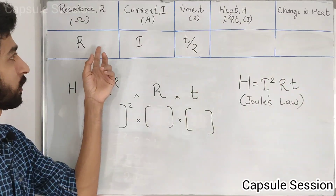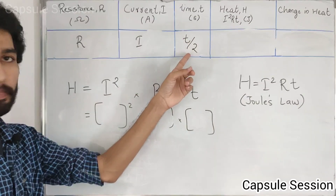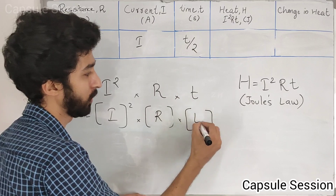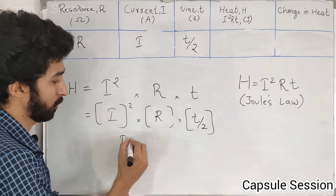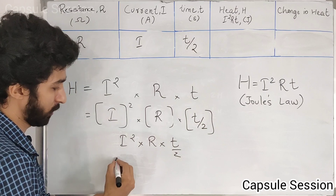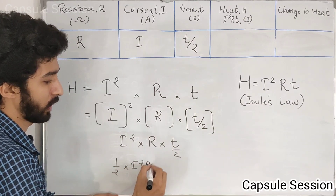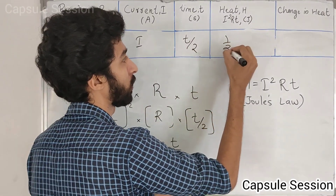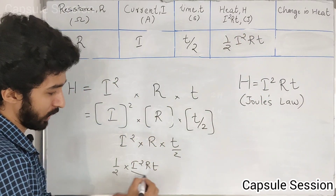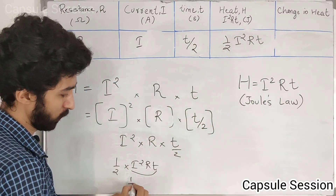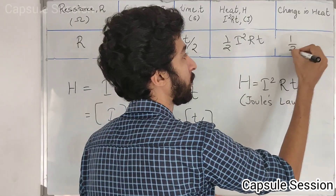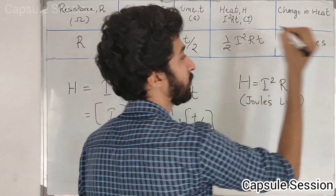So when time changes to T by 2, substitute I value I, R value R, and time T/2. I multiply I² into R into T/2, then I get 1 by 2 into I²RT. So here we have heat equal to 1 by 2 H. Change in heat is half. So here we have 1 by 2 times. Change in heat — this is our final answer.